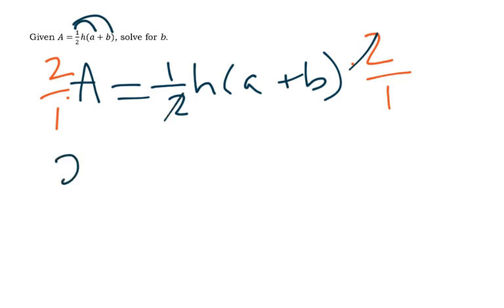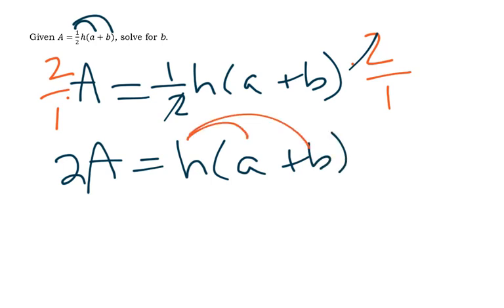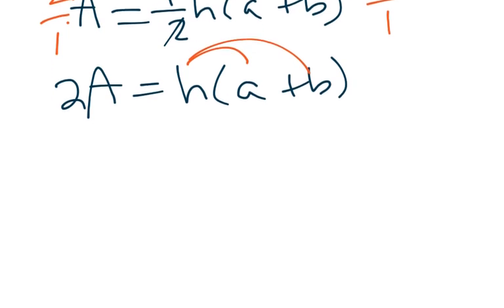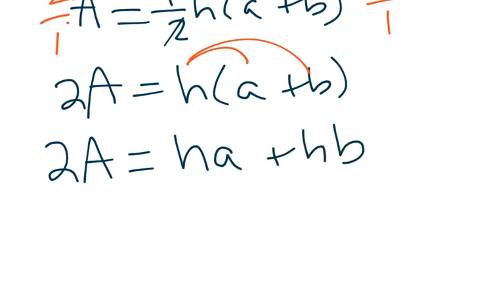It cancels out, so I have 2A = ha + b. Here you're probably thinking, I'm going to distribute. You can do that. If I do that, I have 2A = ha + hb.